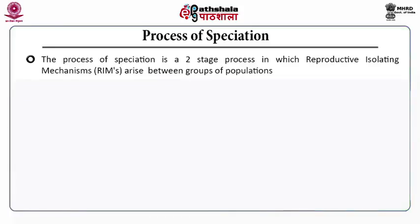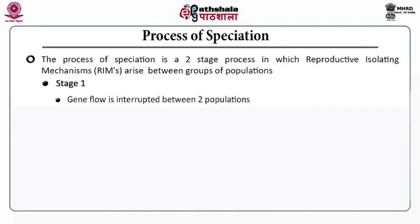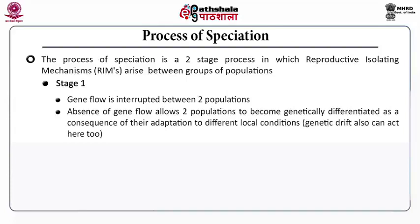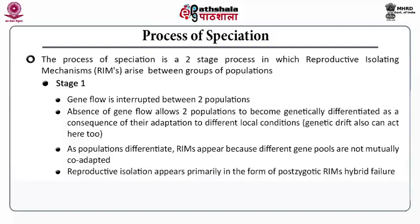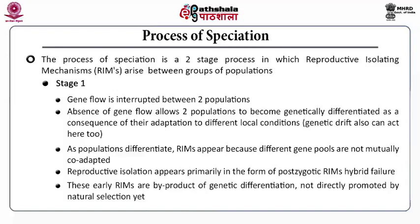Process of speciation. Speciation is a two-stage process in which reproductive isolating mechanisms arise between groups of population. Stage 1 includes gene flow interruption, where the gene flow is interrupted between two populations. Absence of gene flow allows populations to become genetically different as a consequence of their adaptation to different local conditions; here genetic drift also acts. As populations differentiate, reproductive isolating mechanisms appear. Because different gene pools are not mutually co-adapted, reproductive isolation appears primarily in the form of post-zygotic reproductive isolating mechanisms — hybrid failure. These early reproductive isolating mechanisms are a byproduct of genetic differentiation and are not directly promoted by natural selection.